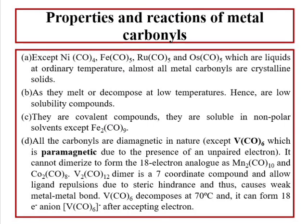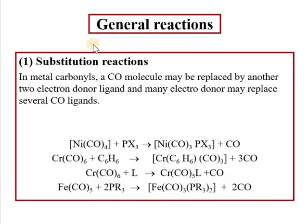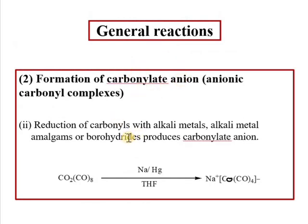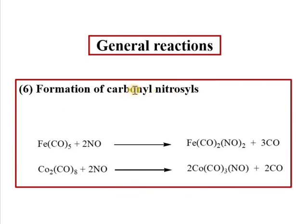So now we can summarize the lecture. We have studied different physical and chemical properties of metal carbonyls. Metal carbonyls are generally colored compounds and solids with low melting points. They are generally diamagnetic because they have all paired electrons, and the metal is in the zero-valence state. They are very toxic in nature. For chemical reactions, they show substitution reactions; they can form carbonylate anions by two methods; they can form carbonyl halides, carbonylate cations, carbonyl hydrides, and carbonyl nitrosyl compounds. Thank you very much.